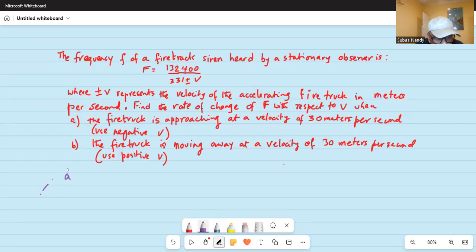Part a, f is equal to 132,400 divided by 331 minus v. Now, we have to differentiate that with respect to v.